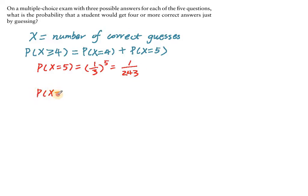And what about guessing four out of five correct? Well, basically, you guessed correct four times, and one time you guessed it wrong.